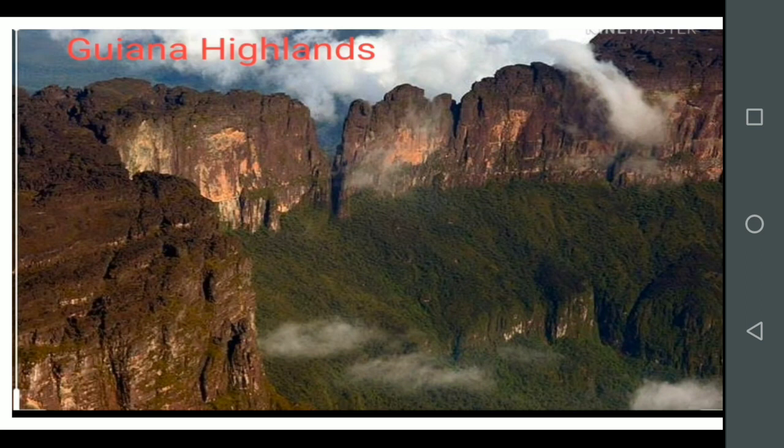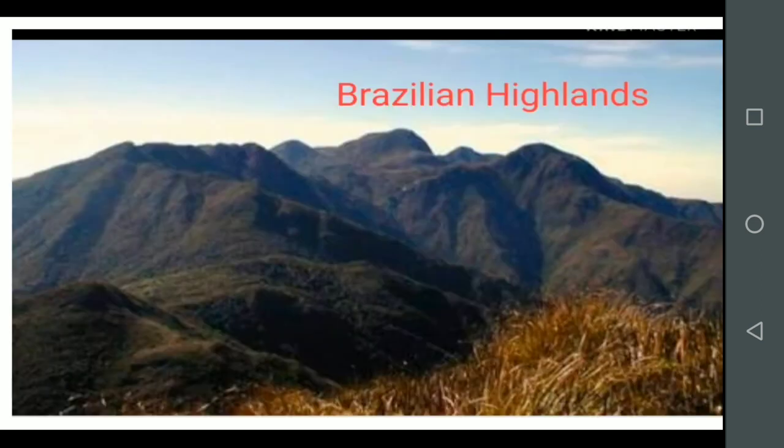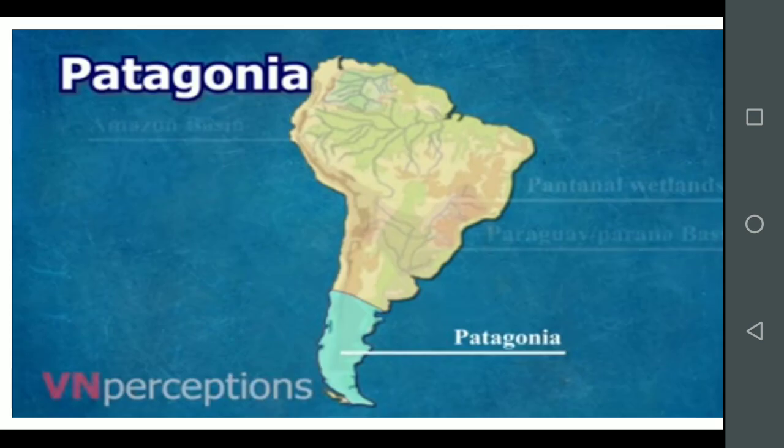The eastern highlands rise steeply in the east from the Atlantic coast and are gentler in the west where they slope towards the central plains. They are much lower in height compared to the Andes. Unlike the young Andes mountains, the eastern highlands are composed of old hard rocks. In the region between 40 degrees south and 50 degrees south in Argentina lies a cold desert called the Patagonia Desert.